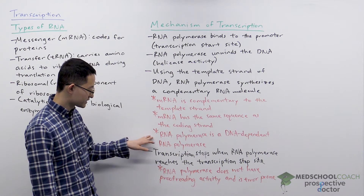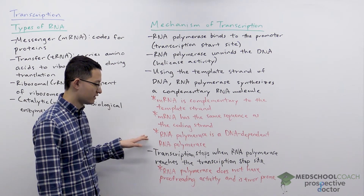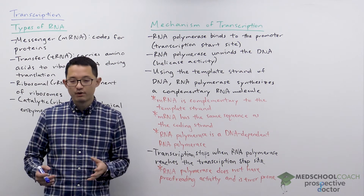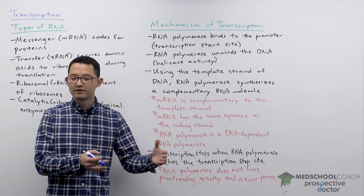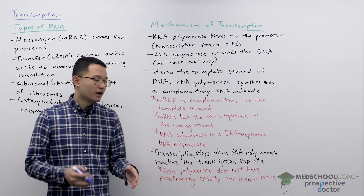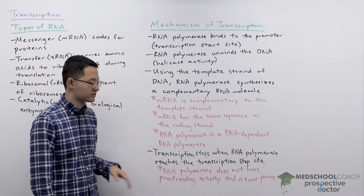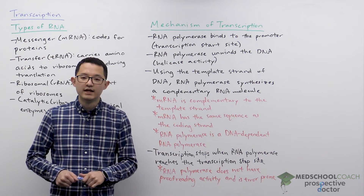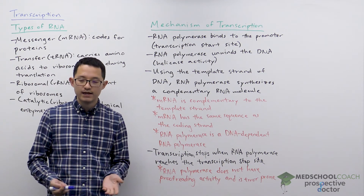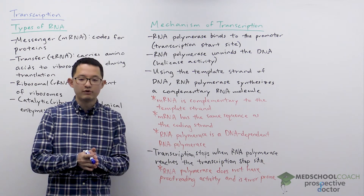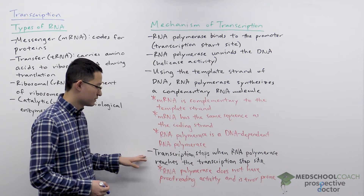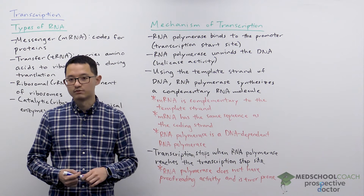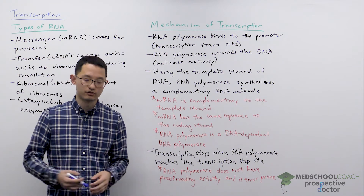Another important thing to note is that RNA polymerase is a DNA-dependent RNA polymerase — it uses DNA as a template to produce RNA. This process will continue producing the RNA molecule until RNA polymerase reaches a transcription stop site, and then it stops. Here's also another distinction between transcription and DNA replication: in DNA replication you replicate the entire chromosome, but in transcription you only transcribe a portion of the chromosome, and usually it's pretty small compared to the entire chromosome.